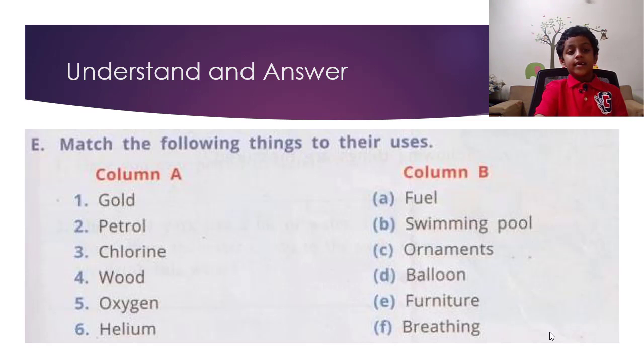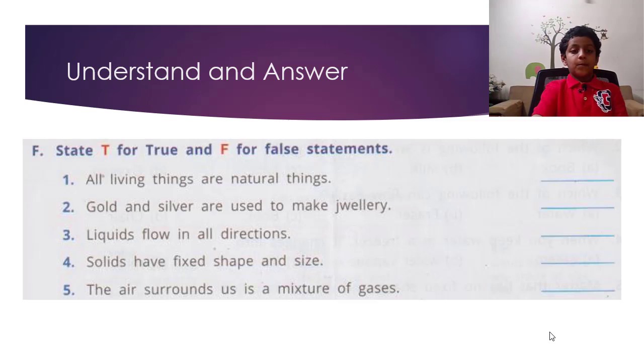Understand and answer. E. Match the following things to their uses: Gold - ornaments. Petrol - fuel. Chlorine - swimming pool. Wood - furniture. Oxygen - breathing. Helium - balloon.